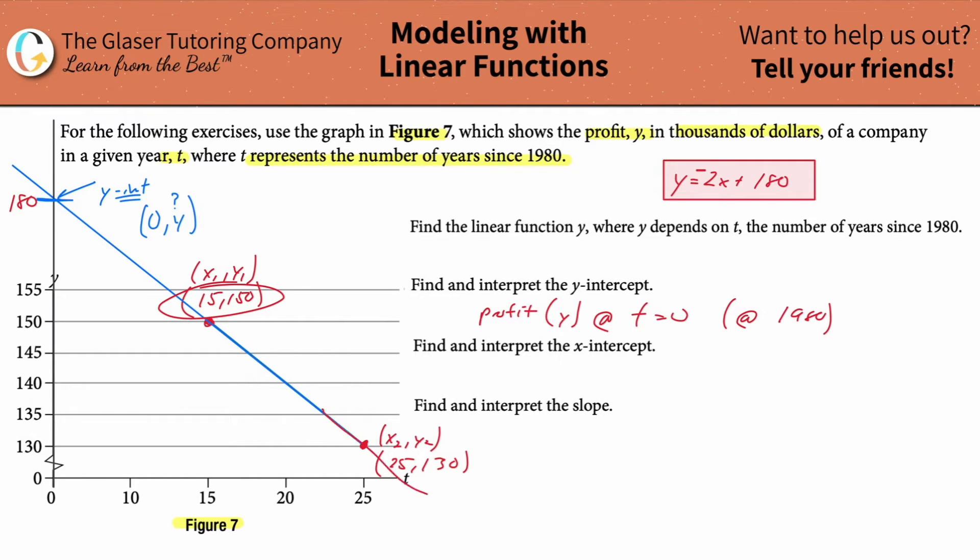Find and interpret the x-intercept. We didn't find that x, but we can do it simply by using this formula. Here's my linear model: y equals negative 2x plus 180. The x-intercept is where the y value will equal zero. So I'm going to plug zero in for y. Notice I have one equation with one unknown, meaning I can calculate it. If I plug in a y value of zero here, then whatever I calculate x to be will be the value of x when y is zero.